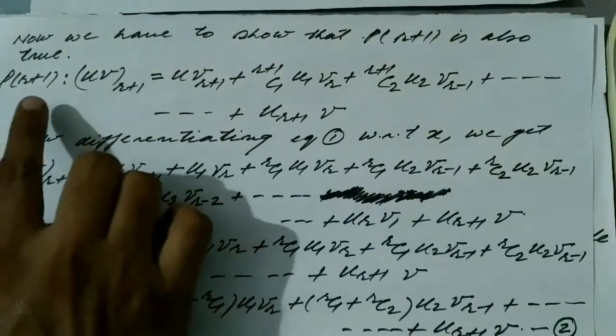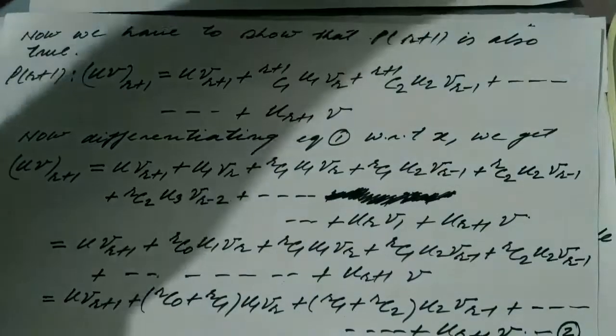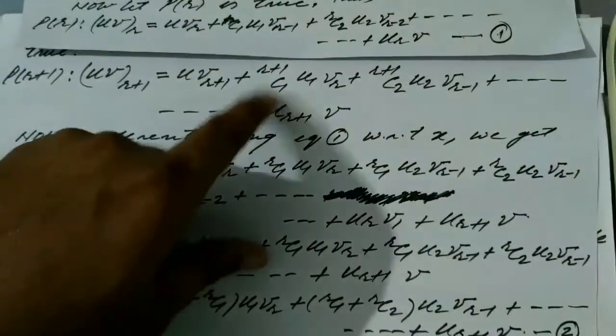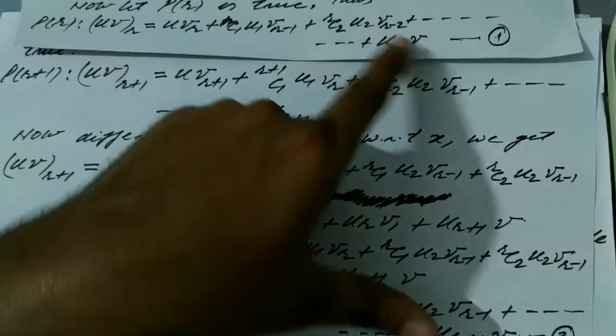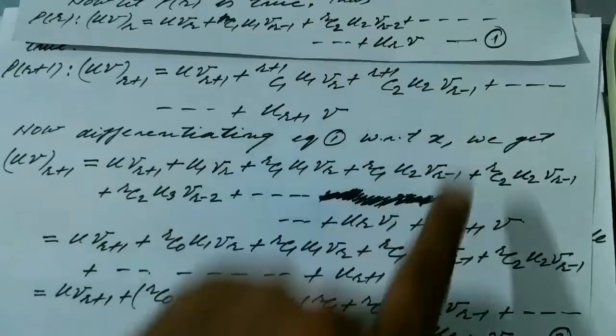Now we have to show that P(r+1) is also true. The statement P(r+1) is obtained by replacing r with r+1 in the expression: (uv)_{r+1} = u·v_{r+1} + (r+1)C1·u1·v_r + (r+1)C2·u2·v_{r-1} + ... + u_{r+1}·v. We have to prove this.